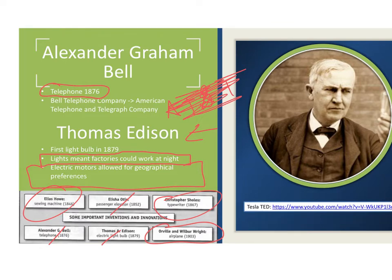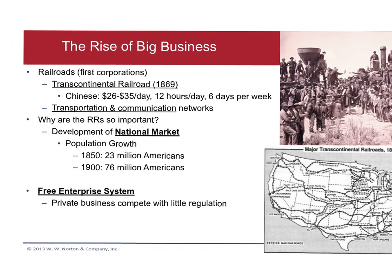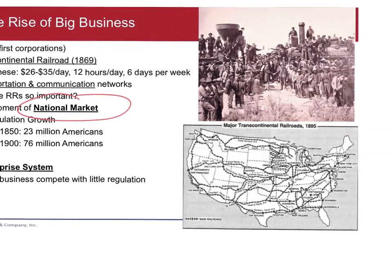The rise of big business is a perfect example of why we start expecting government to step in and do something for consumers. Railroads were the first giant corporations. Workers were treated horribly, paid very little, and some money was even stolen by bosses who charged rent for living in tents. But the railroads did open up transportation and communications, and most importantly, they developed a national market — linking the whole country together by 1895.